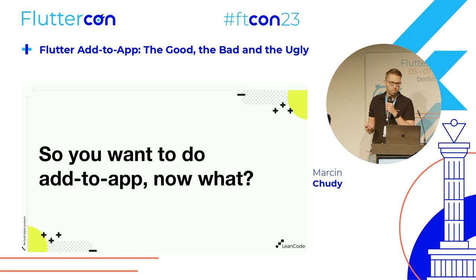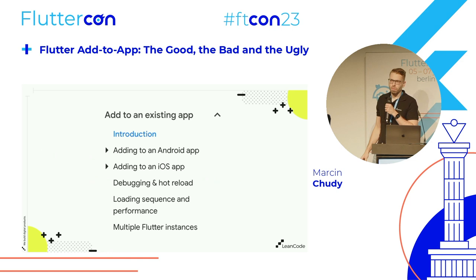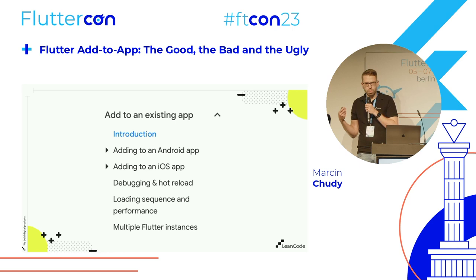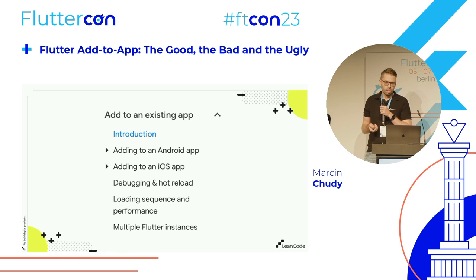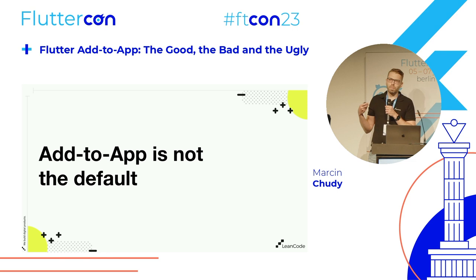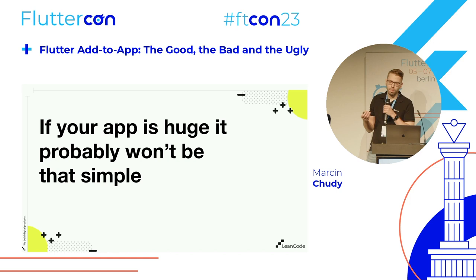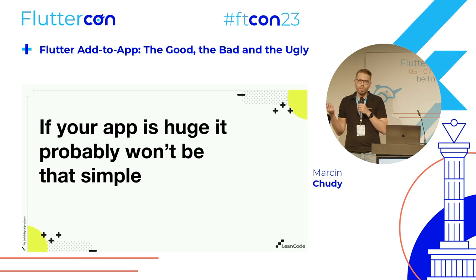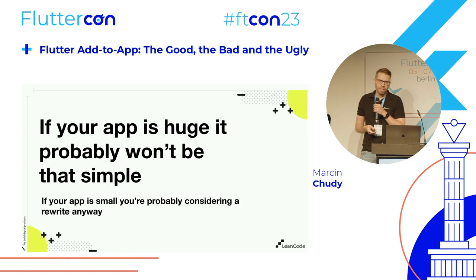Once you've decided to use Add to App, you go to the documentation — there's a section called 'Add to an existing app.' The docs have improved and now mention more modern things like SwiftUI. But remember: Add to App is not the default way of building Flutter apps. If you stumble upon a problem during development, you're much less likely to find good resources on Stack Overflow. If the app you're integrating is very big and long-maintained, it won't be as simple as the docs suggest. And on the other hand, if your app is small, a full rewrite is probably a better option anyway. There is a real overhead to consider.